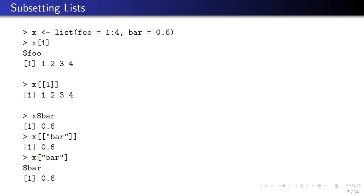Subsetting a list is a little bit different because you can use the double bracket or the dollar sign operator, and also the single bracket operator. Here I have a list where the first element is a named element called 'foo' — it's a sequence 1 through 4 — and the second element is named 'bar' and it's the number 0.6. Using the single bracket to extract the first element gives me back a list, because the single bracket always returns the same class as the original. So x[1] gives a list with element 'foo'. If I use the double bracket, x[[1]], I get just the sequence 1 through 4 — not a list containing it. That's the difference between the single bracket and the double bracket operator.